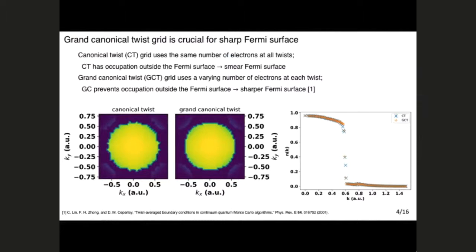The fix to that is to use the so-called grand canonical twist grid. This scheme simply says you can change the number of electrons at each twist. And so we can choose the occupation such that there's no occupation outside the Fermi surface, and you get a smooth Fermi surface like so. And the pluses here is the spherically averaged momentum distribution using the grand canonical grid. You can see it is sharper.